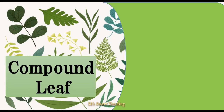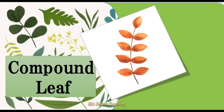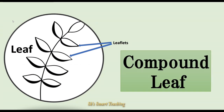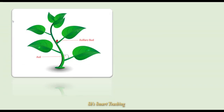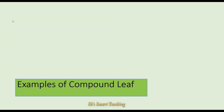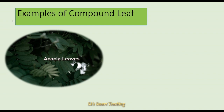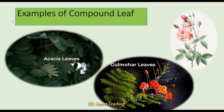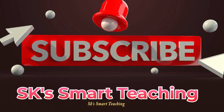In a compound leaf, the leaf blade is clearly divided into many distinct parts called leaflets. Unlike simple leaves, the leaflets do not have axillary buds. Some examples of plants with compound leaves are neem, acacia, gulmohar, and rose.